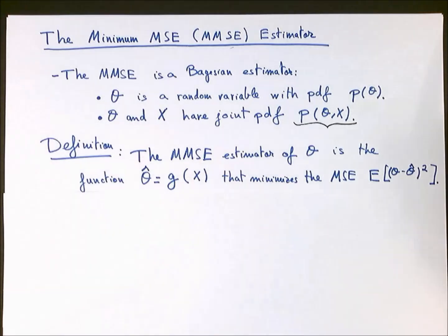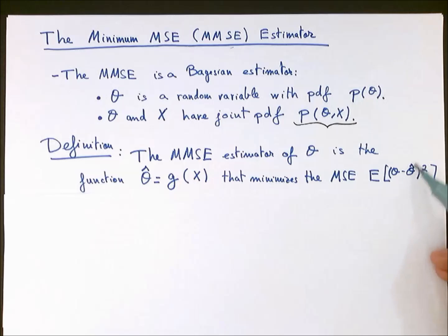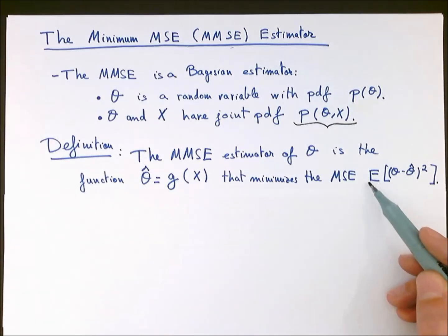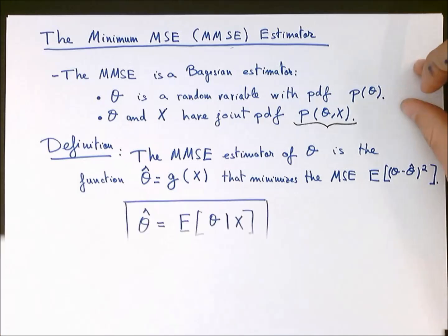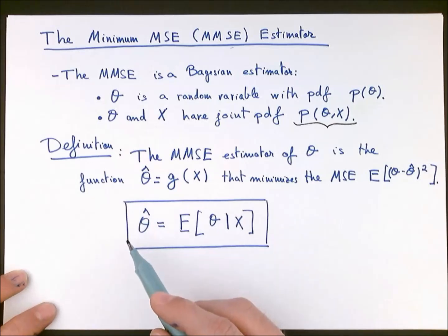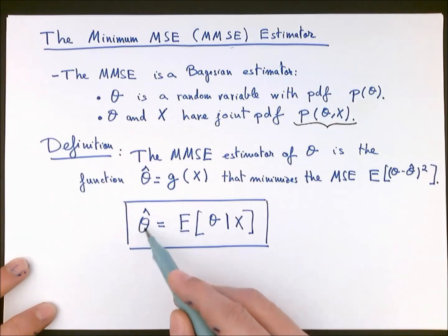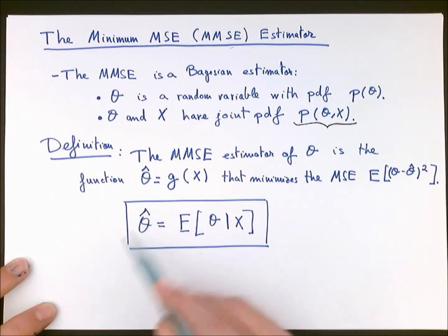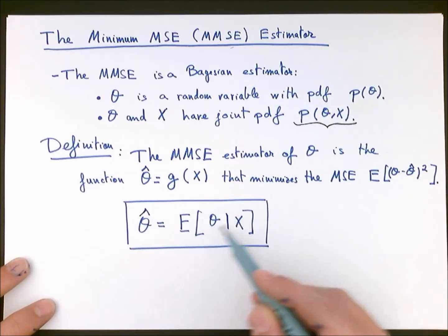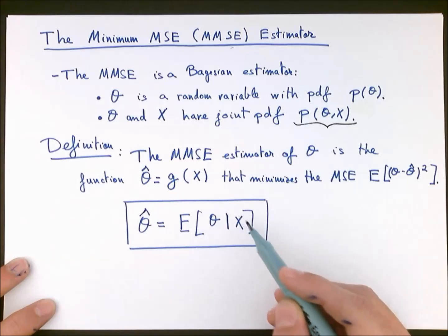If we follow this definition and actually try to find the function theta hat which provides, among all possible estimators, the minimum MSE, we can find — and this we will show in a later video — that the minimum mean squared error estimator theta hat is the posterior expectation of the unknown variable conditioned on a realization of the data.